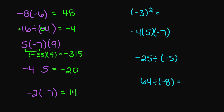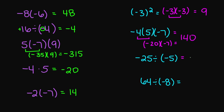Let's look at negative 3 squared. This equals negative 3 times negative 3, which gives a positive 9. Next: negative 4 times 5 times negative 7. Negative 4 times 5 gives negative 20, and then negative 20 times negative 7 gives a positive 140. Next: negative 25 divided by negative 5 gives a positive 5. And 64 divided by negative 8 gives negative 8 — we have a positive 64 and a negative, so you're going to get a negative answer.